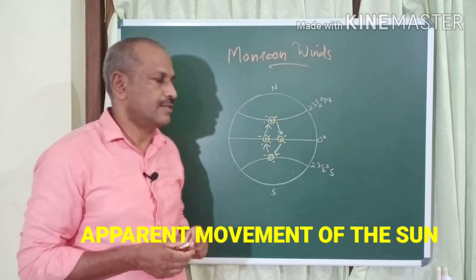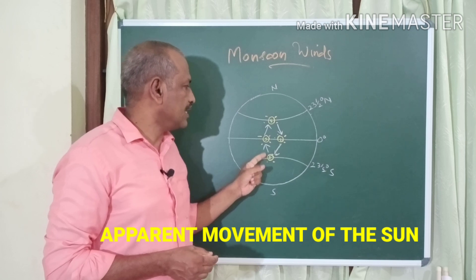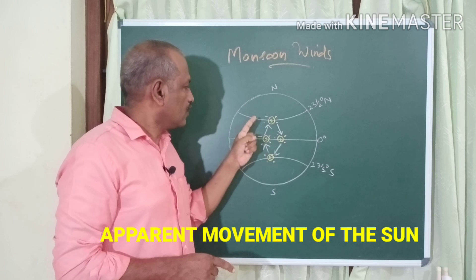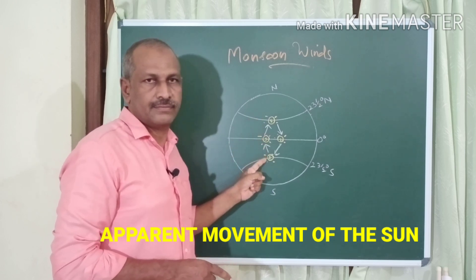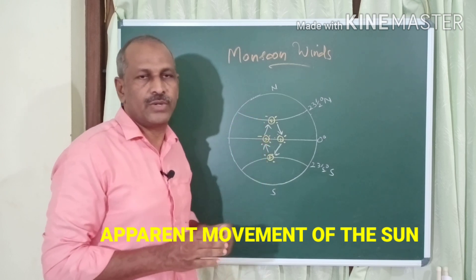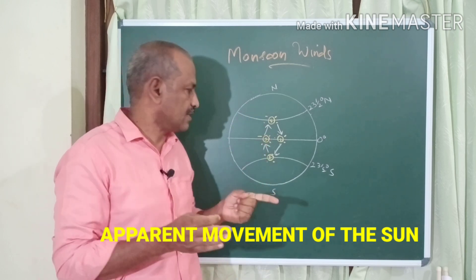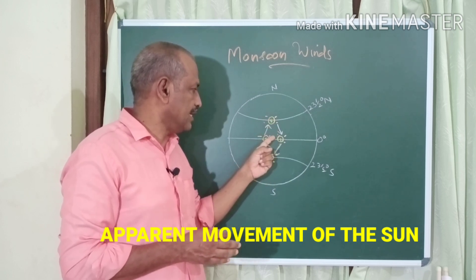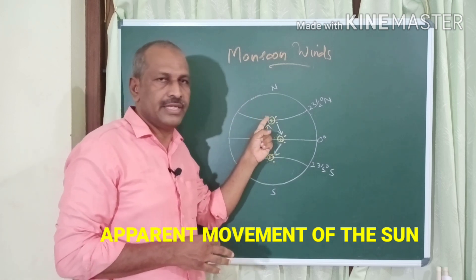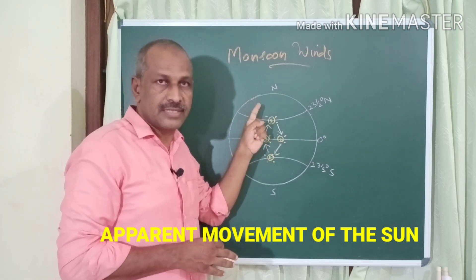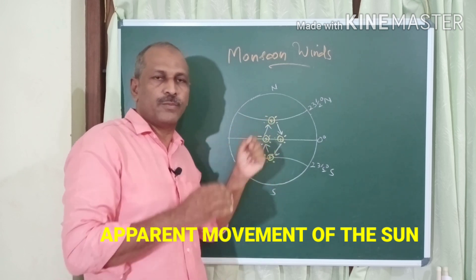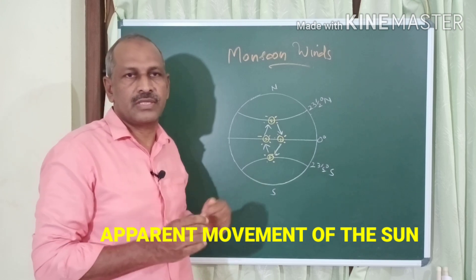The first factor is the apparent movement of the sun. The sun shifts between the Tropic of Cancer and the Tropic of Capricorn, and this migration is called the apparent movement of the sun. For six months the sun is over the northern hemisphere, making temperatures very high there — it is summer in the northern hemisphere and winter in the southern hemisphere. It is this apparent movement of the sun that causes seasons.